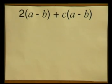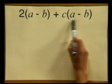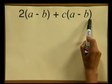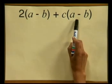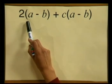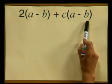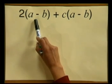Can we factorize this expression? First tell me, how many terms are there in this expression? Let me show you. The brackets keep the a and the b together to make it one factor, a minus b. So there are two terms in the expression — namely, the 2 multiplied by the a minus b, and the c multiplied by the a minus b. And each term has the common factor a minus b.